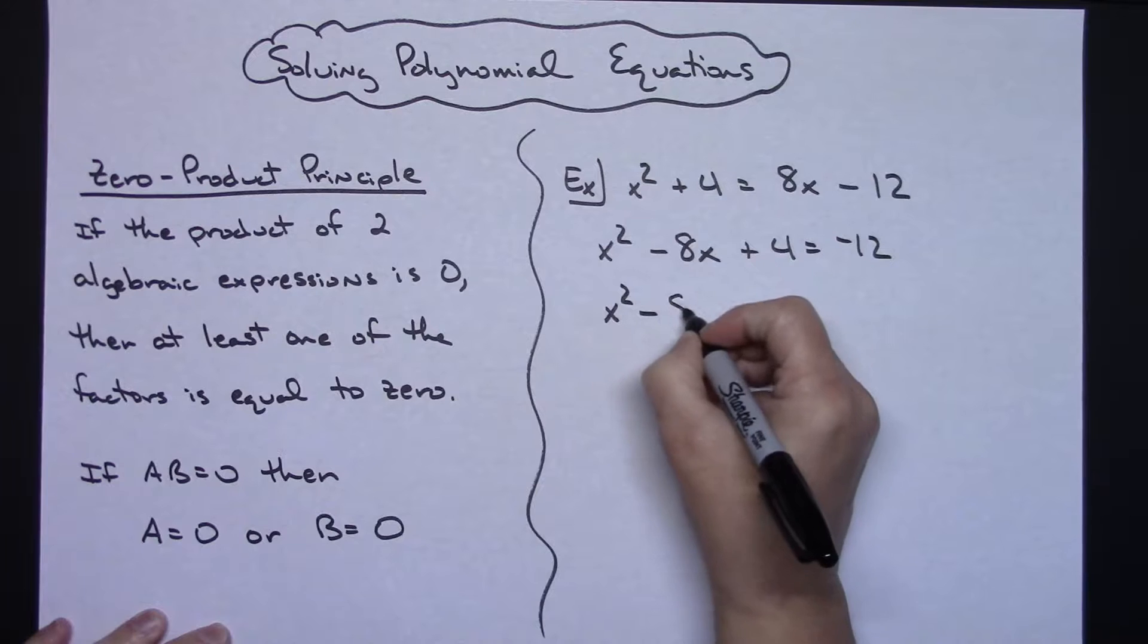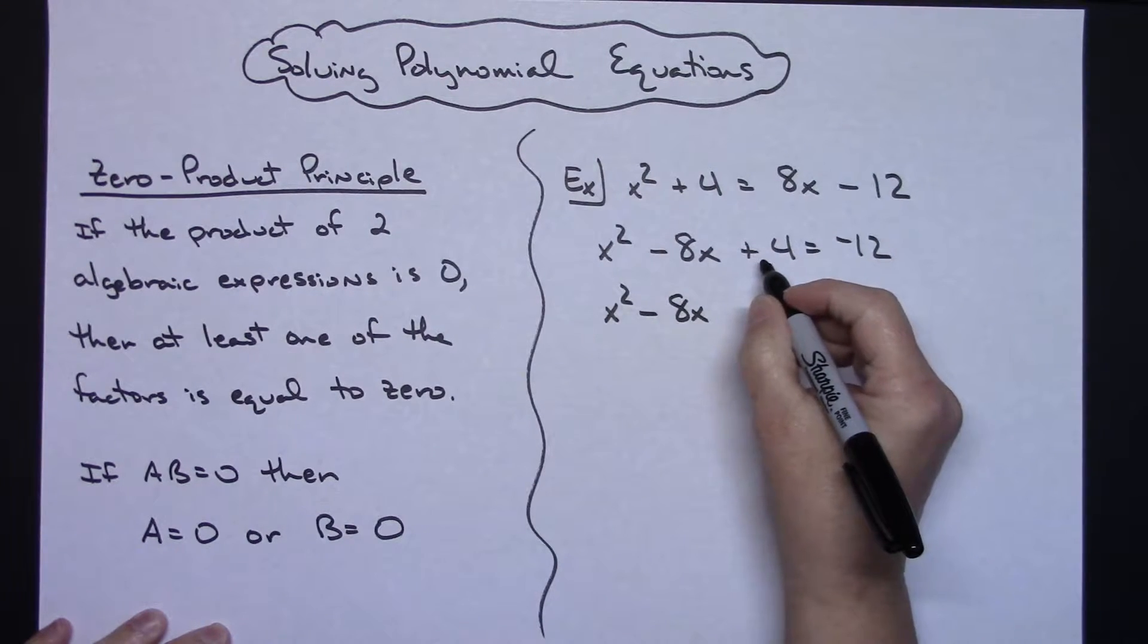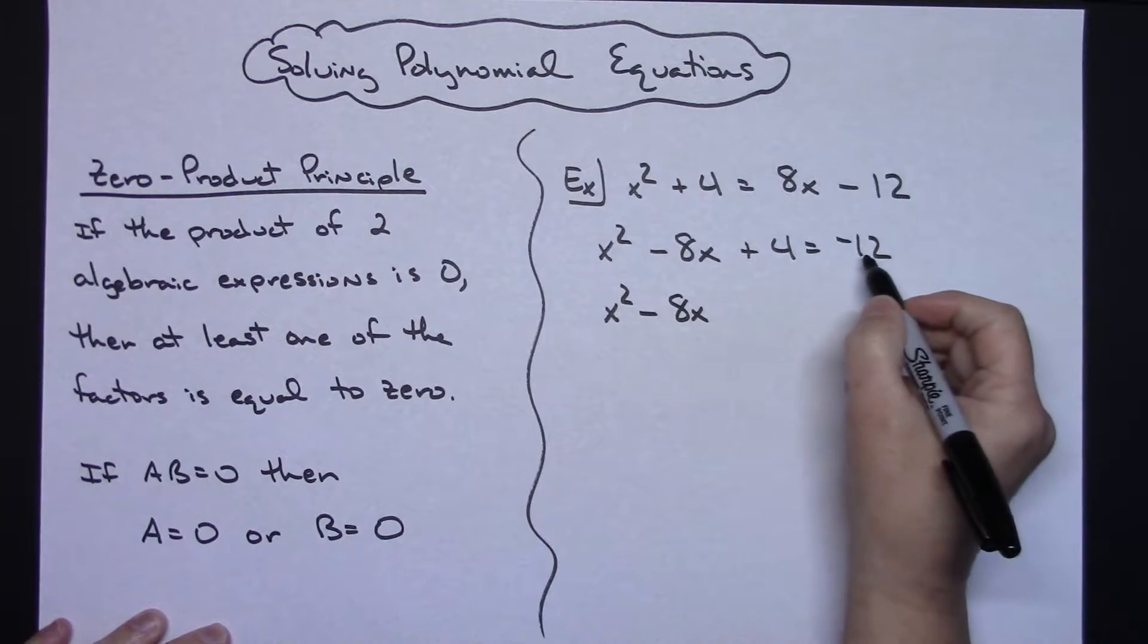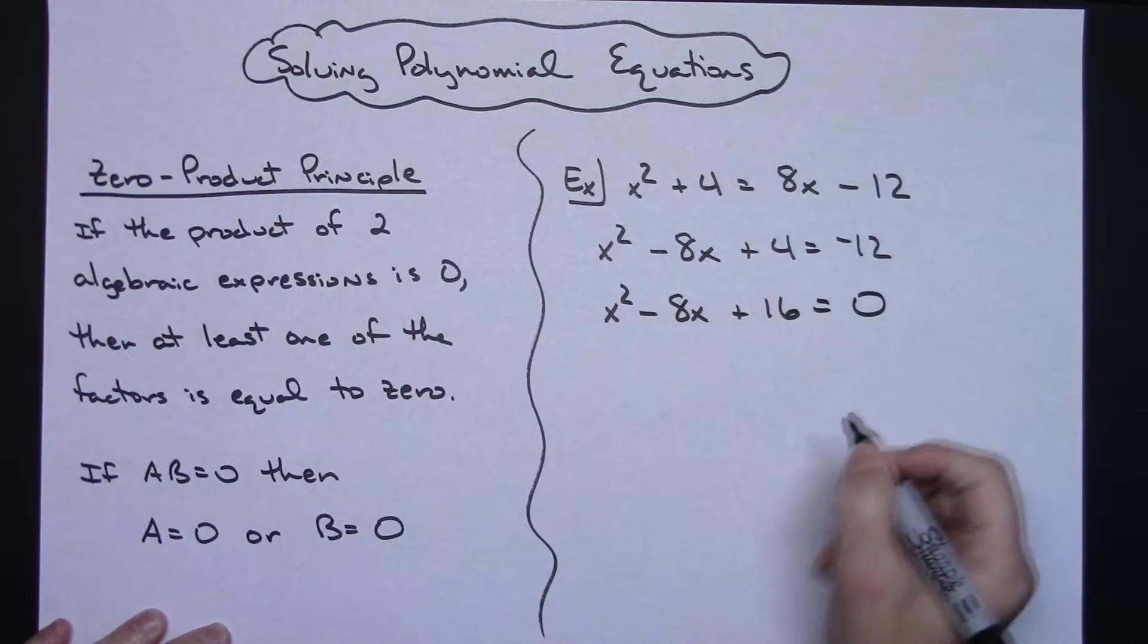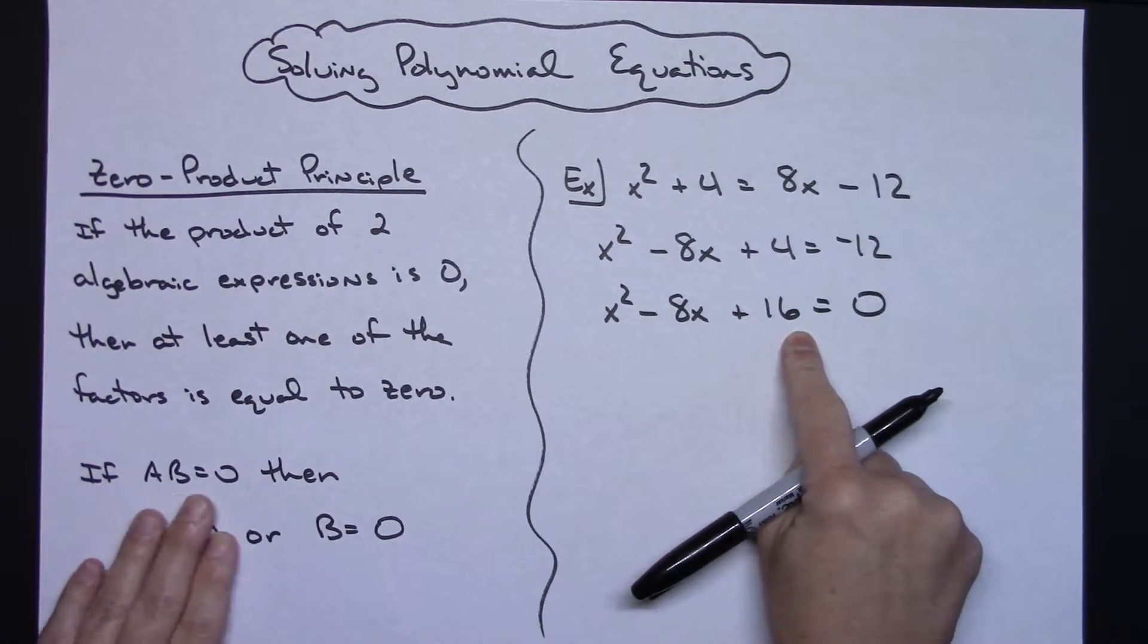So x squared minus 5x, and then a positive 4, add 12 more to that. That's going to be a plus 16, equals zero.